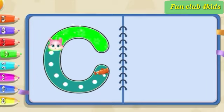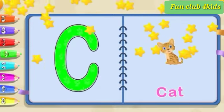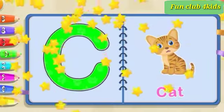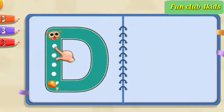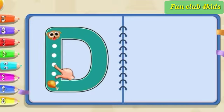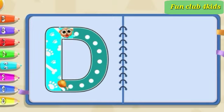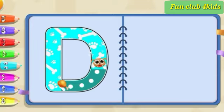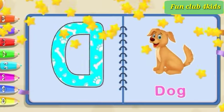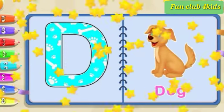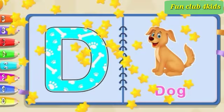Pull down, go to the top and around. C is for cat. Pull down, go back to the top, and around. D is for dog.